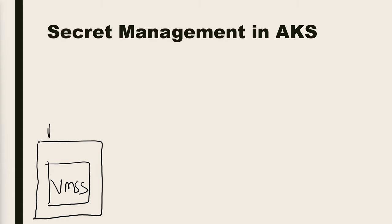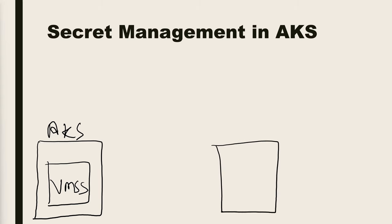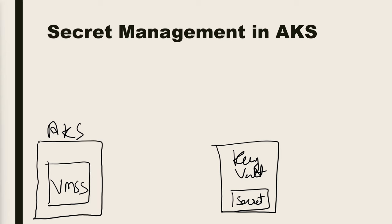We already have an AKS cluster created with virtual machine scale sets. First, we will create an Azure Key Vault service, then create a secret in it to save the sensitive information. By default, AKS cannot directly access Key Vault — we have to enable the CSI driver add-on. CSI stands for Container Storage Interface drivers, which are codes that allow AKS to recognize Azure Key Vault.